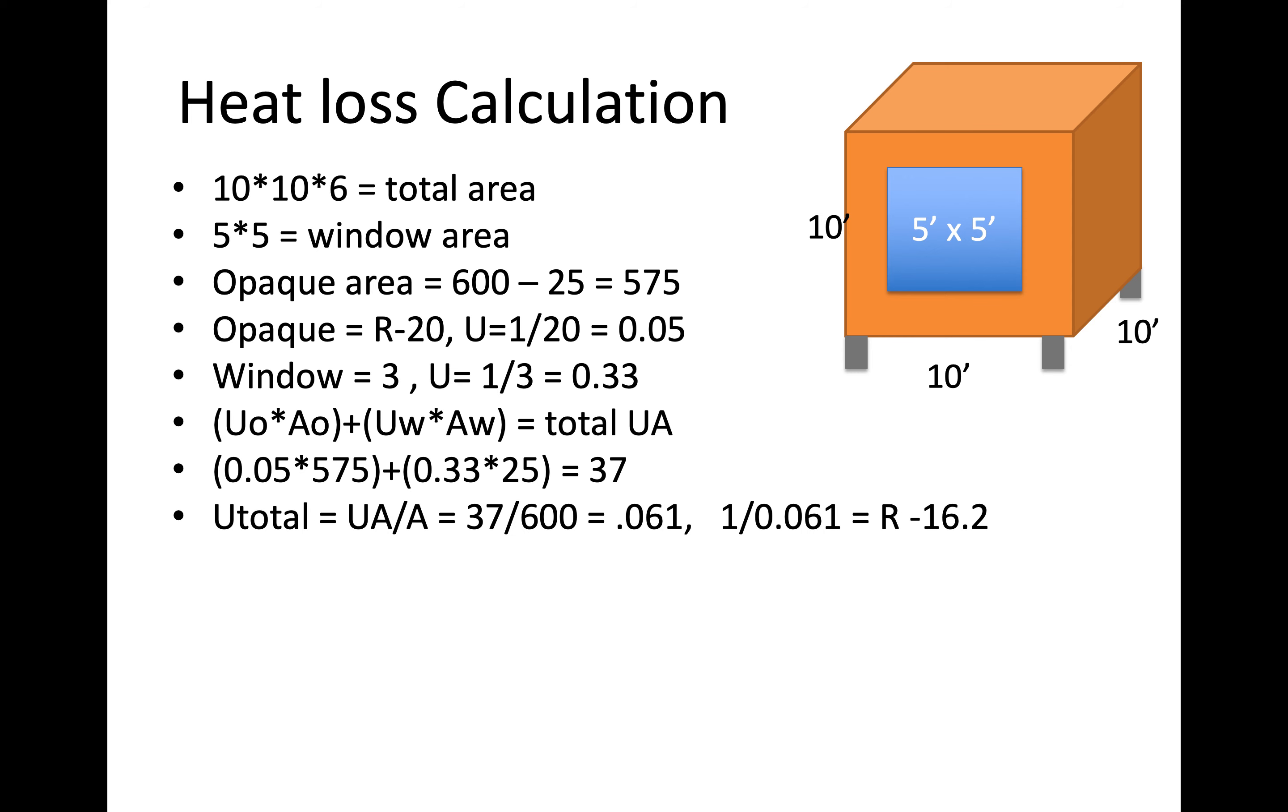Now if we wanted to find what the effective r value of that is, which I didn't actually ask in the question, we'd say take the total UA and divide that by the total area. So that's 37 divided by the total surface area of that cube, which is 600 square feet, so that's 0.061. And then the inverse of that 1 divided by 0.061, so then our r value is r16.2. So that's just how we calculate the total r value.